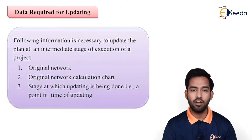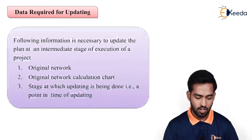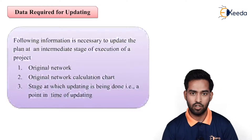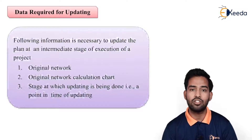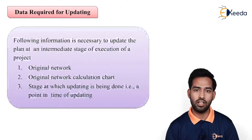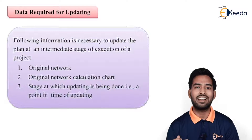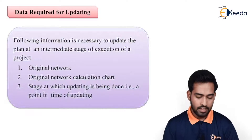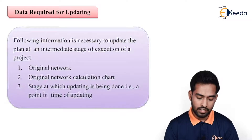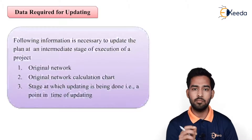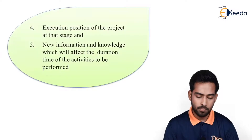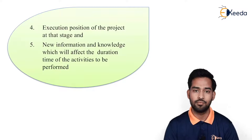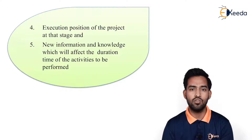What data do we require for updating? If I have to update my network or the project, we require: first, the original network which has been sanctioned before starting the project; then the original network calculation chart, meaning we require all the float calculations, the cost calculations, and the duration of the project critical path. We also need the stage at which updating is being done — that is, the exact point in time of updating — and where we should update it. Then we need the execution position of the project at that stage: at the stage of updating, what is the actual execution position of the project.